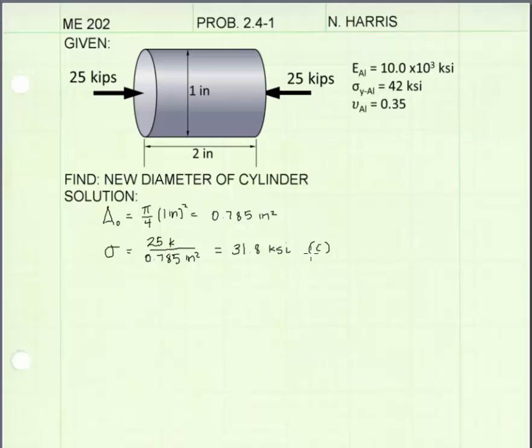And note here, in parentheses, I have a C. That stands for the stress in the cylinder is in compression. Now I compare the stress in the cylinder to the yield stress of aluminum that was given. And we see that our actual stress, 31.8 ksi,